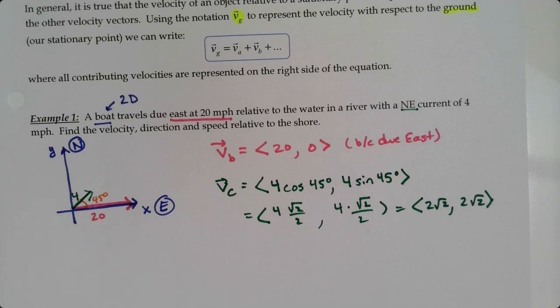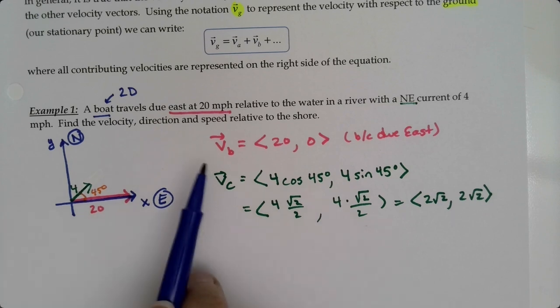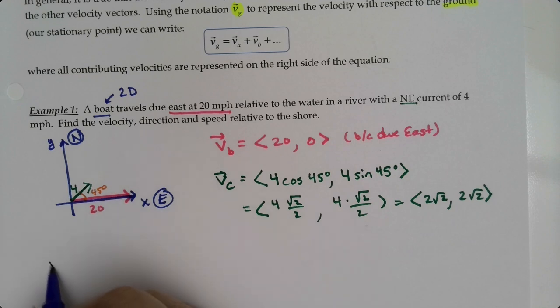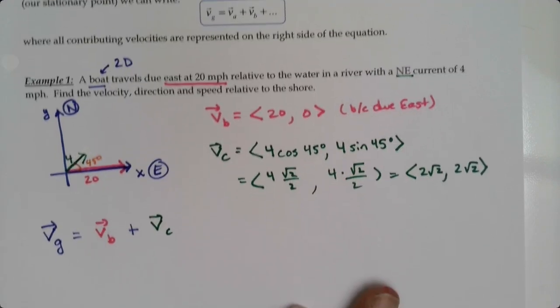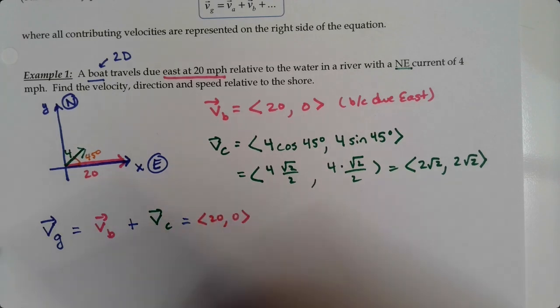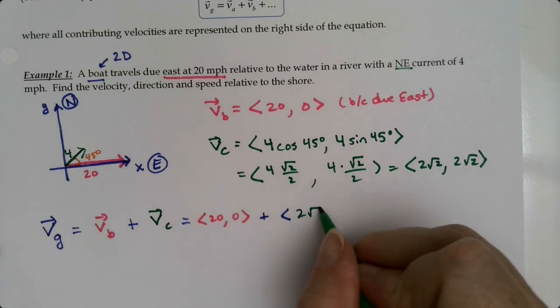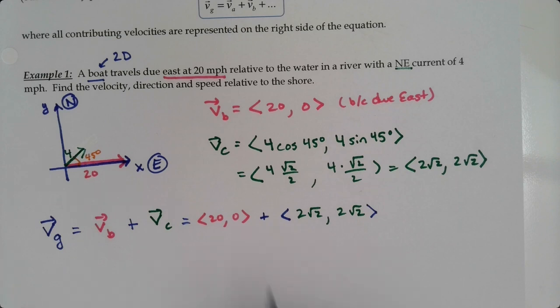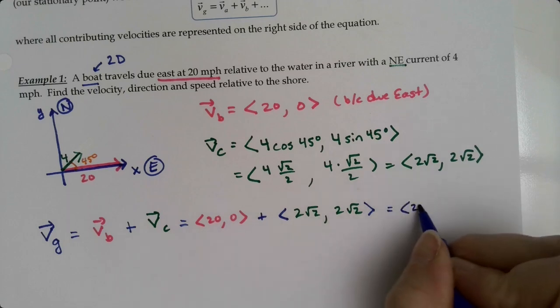The combined velocity, the velocity with respect to a stationary point—the boat is putting its engines at 20 miles per hour but the current is pushing it—so the velocity to the ground is the velocity from the boat plus the velocity from the current. That would be <20, 0> plus <2√2, 2√2>.